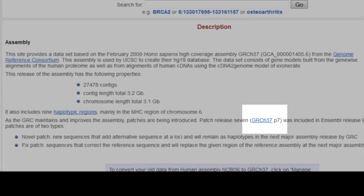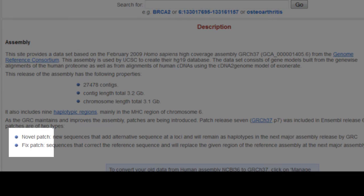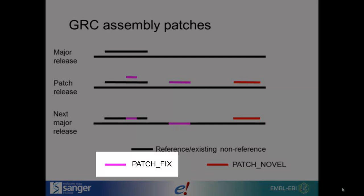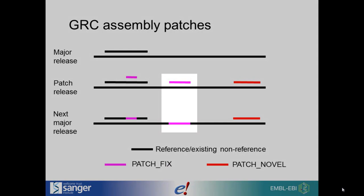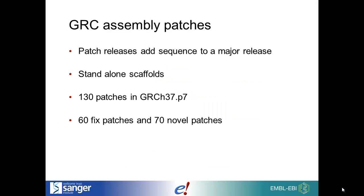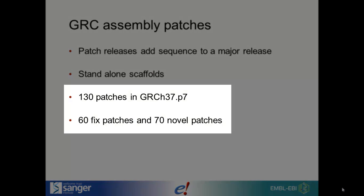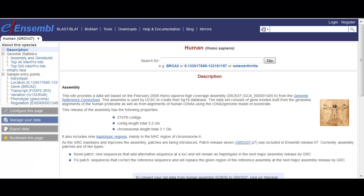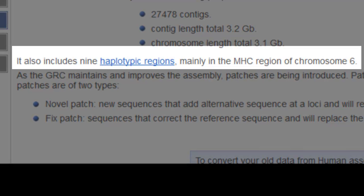There are two kinds of patches. Novel patches represent a different version of the genomic sequence, and will be retained as alternative sequence when GRCh38 is released. Fixed patches are the second type of patches. These correct gaps and erroneous sequence in the assembly, and will be incorporated into the primary assembly when the GRC releases a new assembly. You can see there are quite a few patches, and there are nine haplotypes, mainly in the MHC region of chromosome 6.